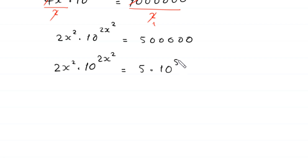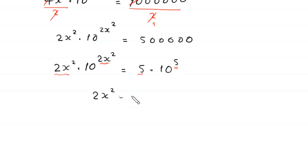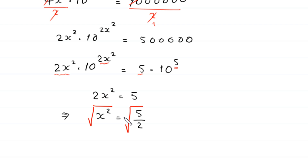Comparing the left-hand side — 2x squared times 10 to the power 2x squared — with the right-hand side — 5 times 10 to the power 5 — we can equate corresponding parts: 2x squared equals 5. Dividing both sides by 2 gives x squared equals 5 over 2. Taking the square root of both sides gives x equals plus or minus the square root of 5 over 2.